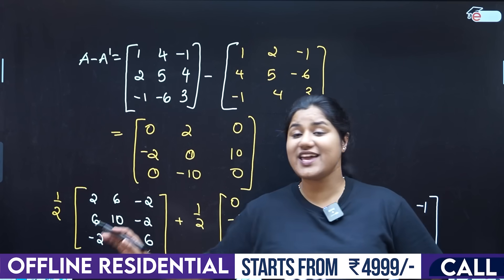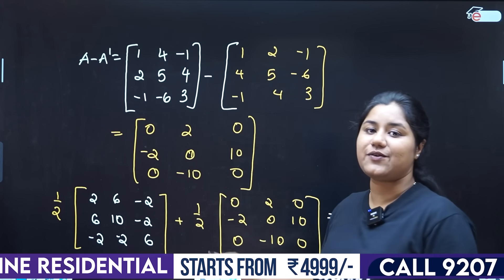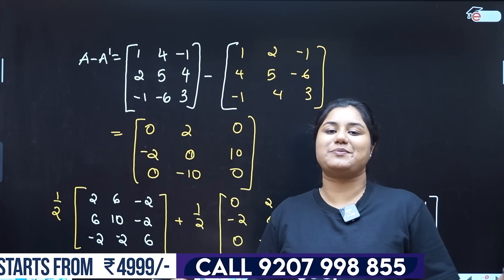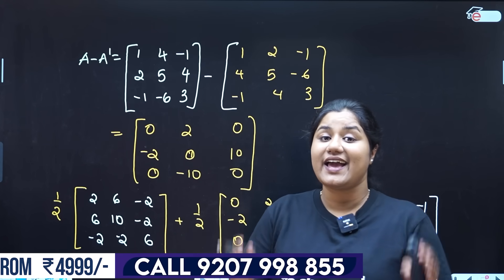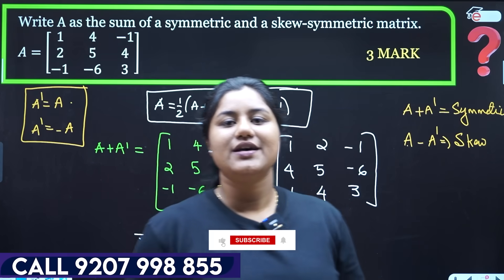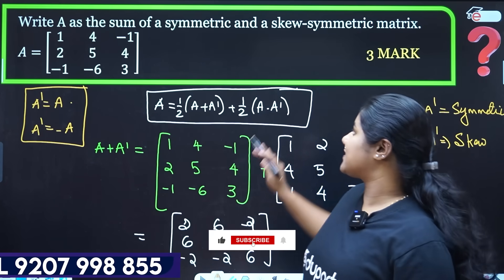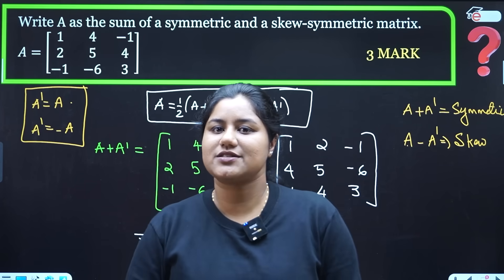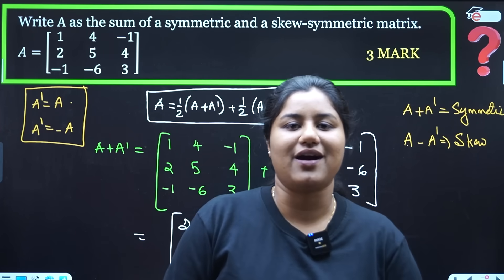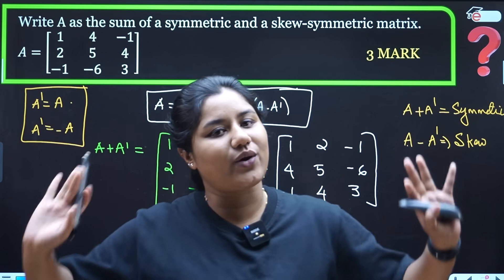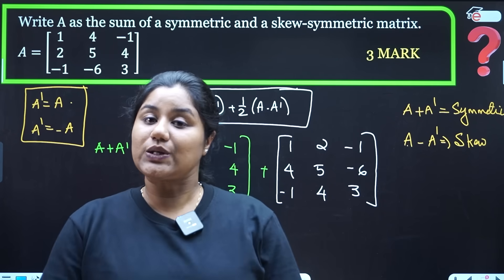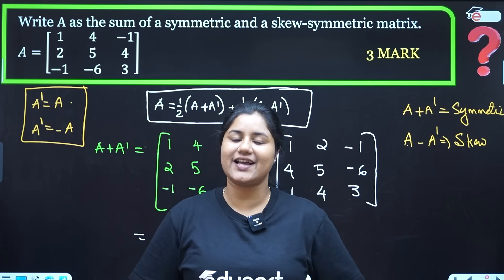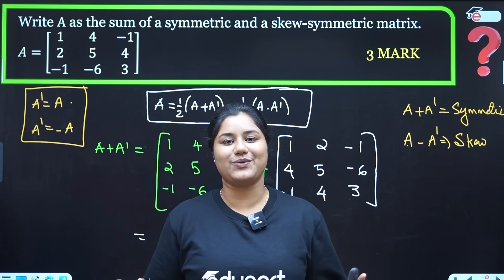Hence, the proof is complete. This question is very important — almost all question papers ask you to express a matrix as the sum of a symmetric and skew-symmetric matrix. You can score full marks in this topic. Even if you have any calculation mistakes, you can still score marks.